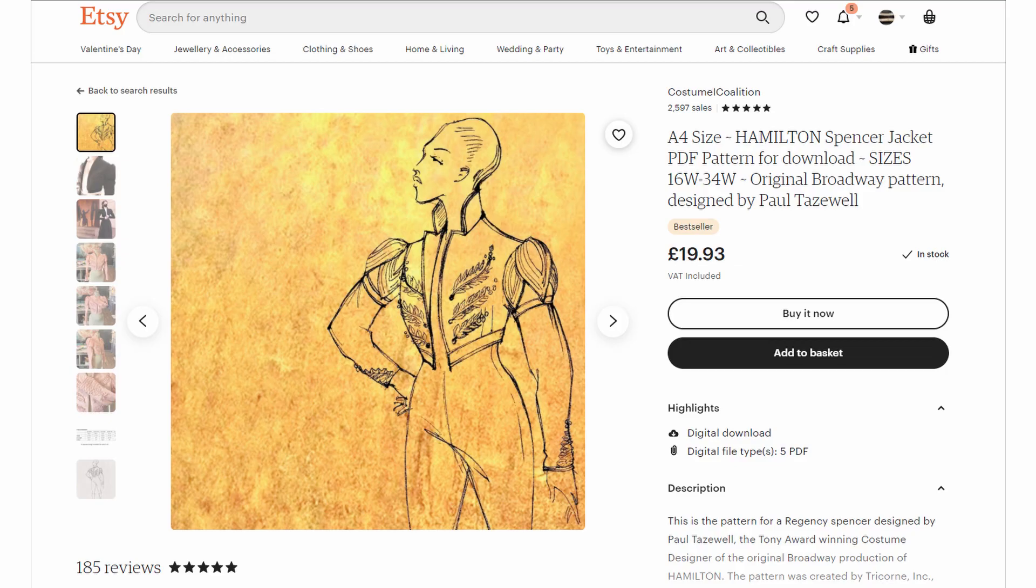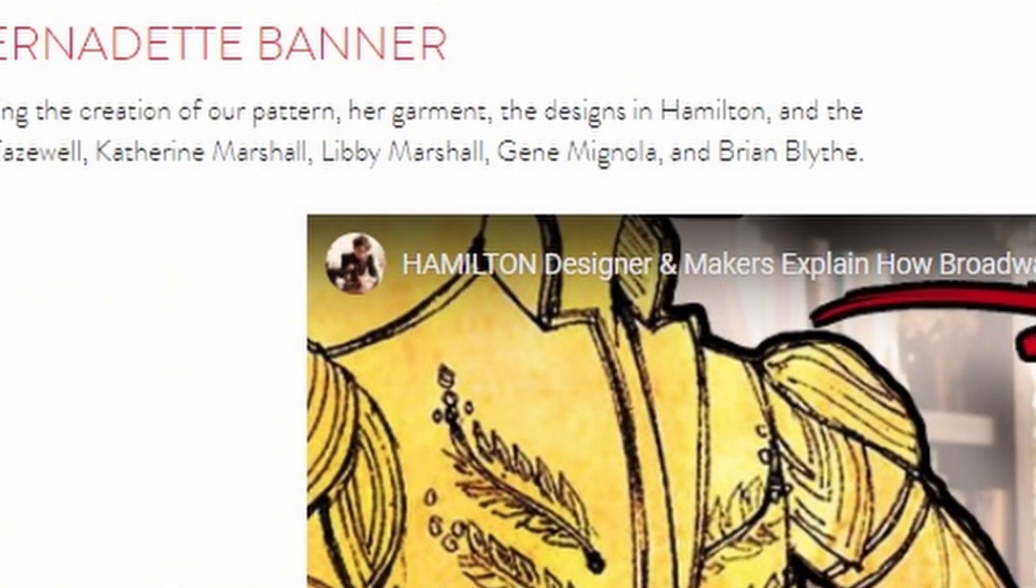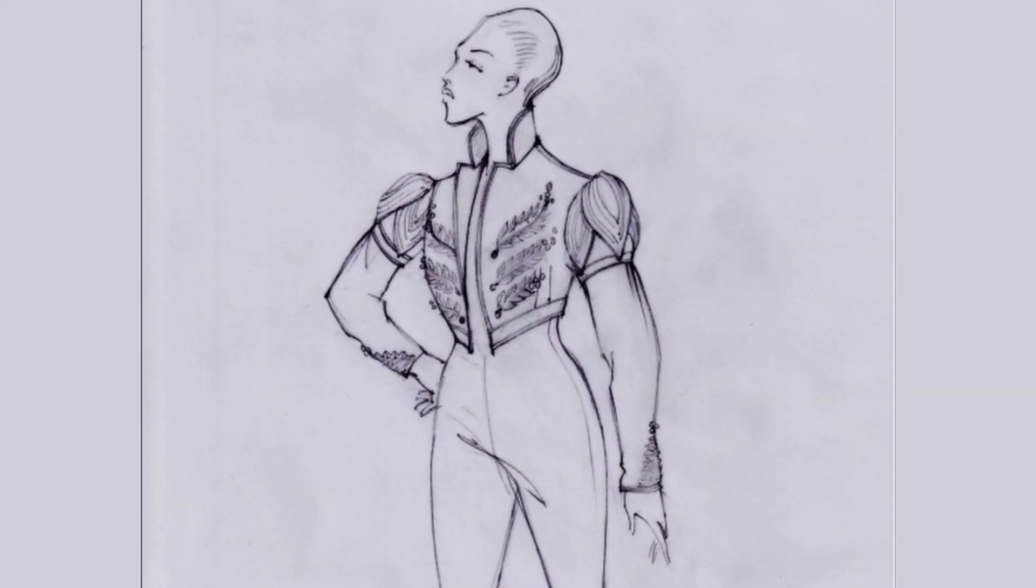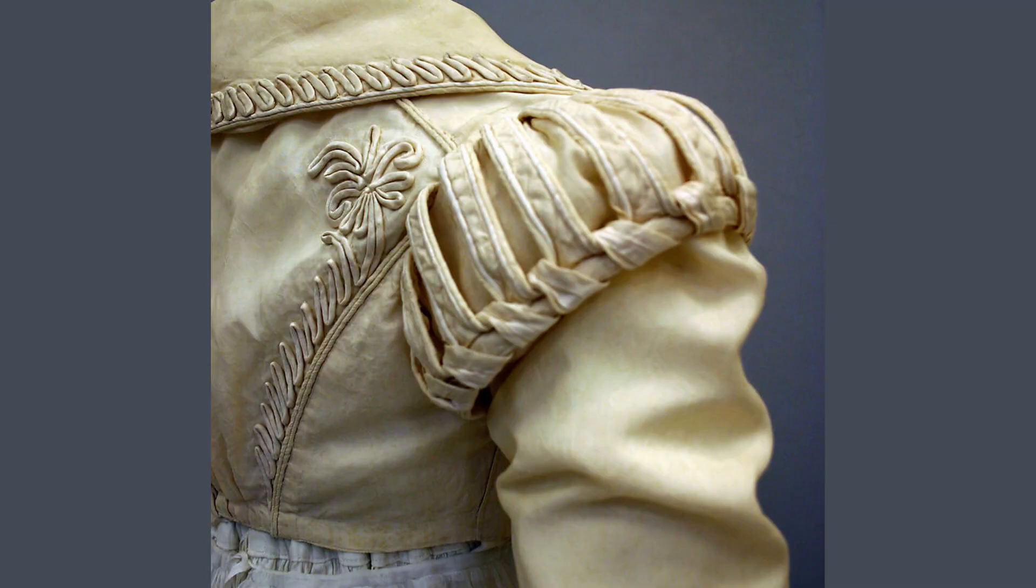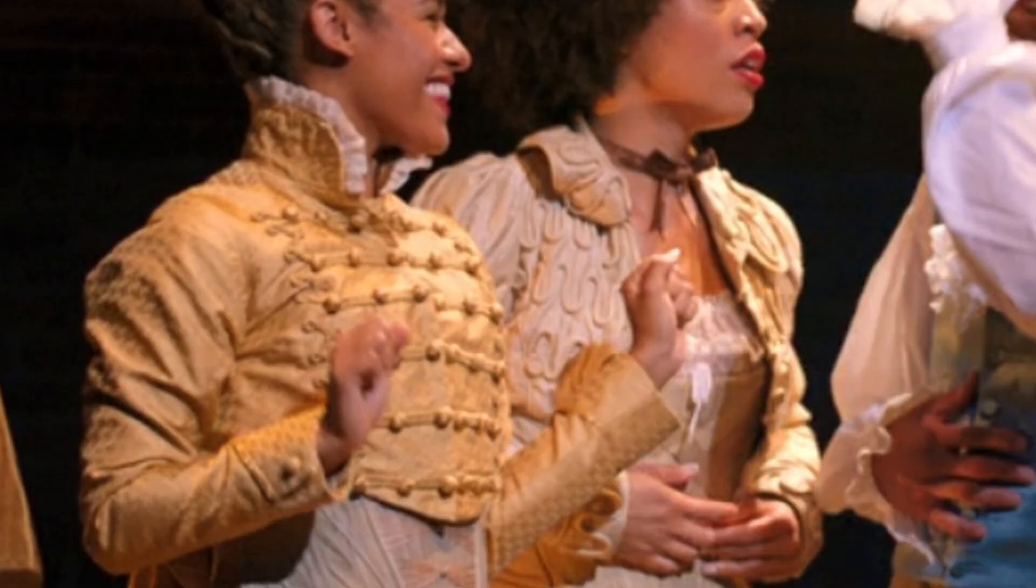Paul Tazewell's Hamilton Spencer, a pattern sold to help support the costume industry coalition and its efforts to keep the entertainment costume industry alive. One of the defining features of this garment, both the theatrical versions and original examples, is the glorious and varied trim and decoration. All of this needs to be prepped and applied before the actual jacket is put together.